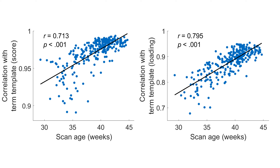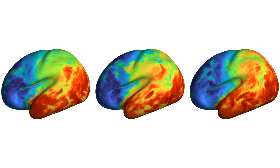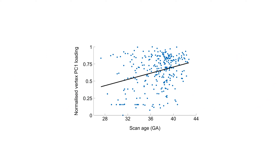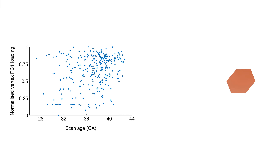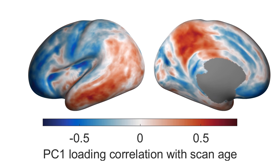Of course, this is only looking at overall similarity, and we know parts of the brain develop at different rates, so there are likely regional differences. We can see this if we look at individual cortical projections — while the overall spatial patterning is roughly similar, there are clear areas of difference. To assess these regional differences, we can assess how vertex loadings across neonates vary with age. Projecting these values back onto their respective vertices, we can see pronounced changes with age in frontal, temporal, and parietal association areas, as well as somatosensory and insular regions.